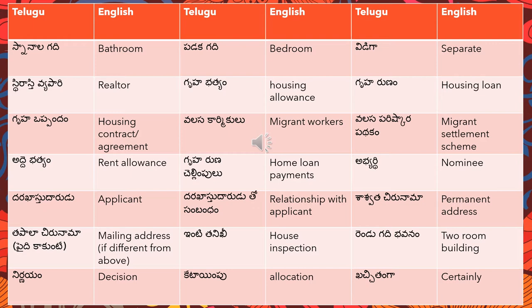'Sasvata chirunama' means permanent address — 'sasvata' literally means forever, but in this context it means permanent. 'Tapala chirunama paidi kakunte' means mailing address if different from above.